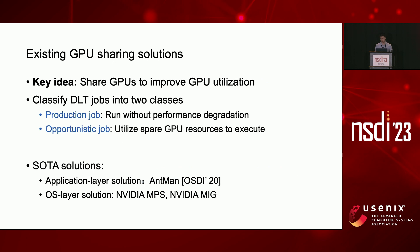The root cause of low GPU utilization is that each GPU is statically assigned to a single container. When a GPU is allocated to a container, the container has exclusive access to the GPU, which provides performance isolation for production jobs, but means other containers cannot utilize the GPU when it is underutilized or completely idle. The problem can be addressed by sharing GPUs to increase utilization. In production environments, DL training jobs are classified into two classes: production jobs, which must run without much performance degradation, and opportunistic jobs, which utilize spare resources.